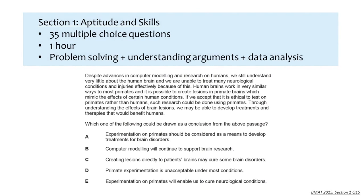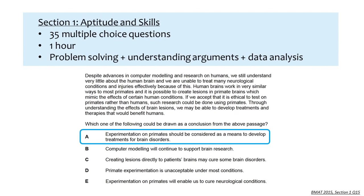Here's an example question from the 2015 BMAT paper. In this question, you're asked to read a short passage and choose the statement which could be drawn as a conclusion from this passage. In this case, the answer could only be A, as none of the other statements could be drawn as conclusions from the passage. If you didn't get this one, it's best to practice since these questions aim to test your thinking skills.